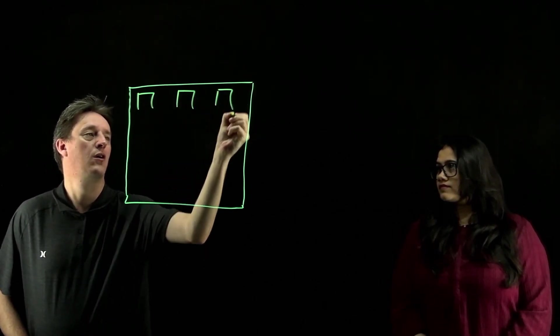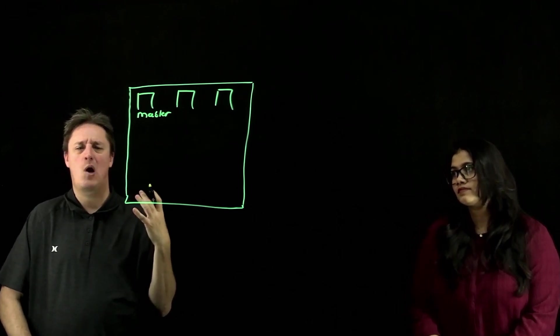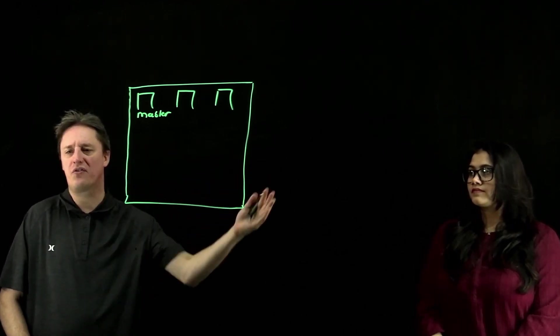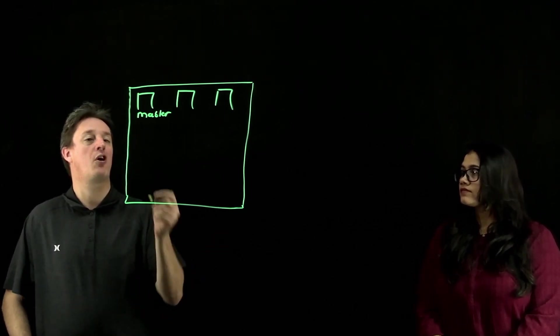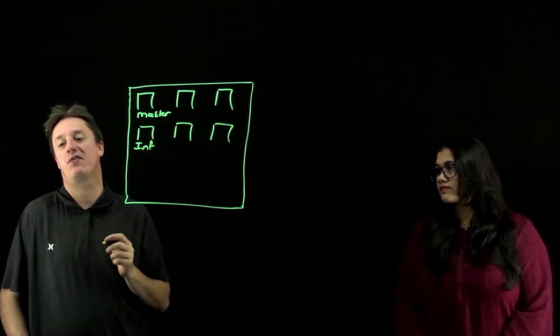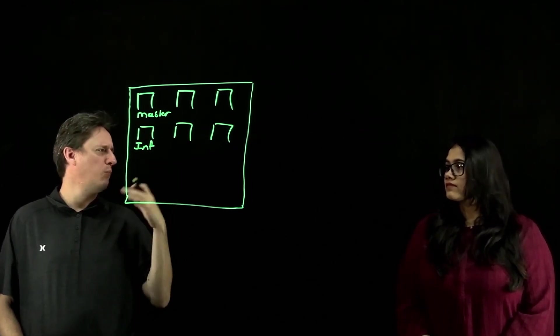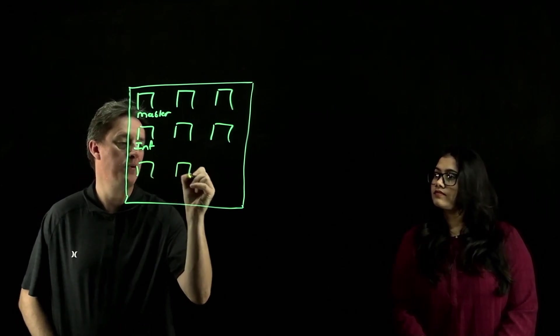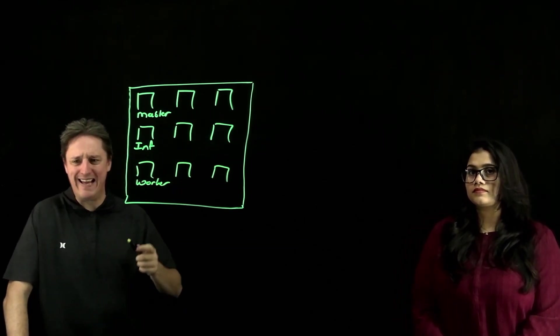Typically what that looked like was a collection of control plane nodes or what was called master nodes. So, this is the OpenShift control plane. These are the API endpoints. These are three of them and they are spread across three availability zones inside that AWS account. There's also an additional three EC2 instances that would form the infrastructure nodes. Most importantly, these would contain things such as the OpenShift routing layer, monitoring, logging, those sort of elements.